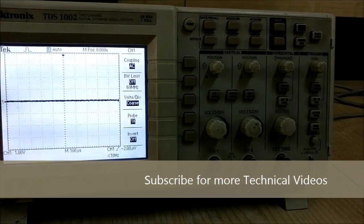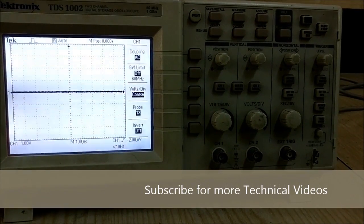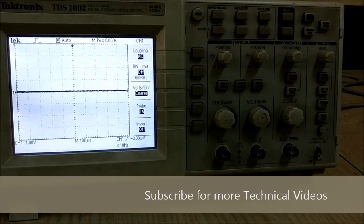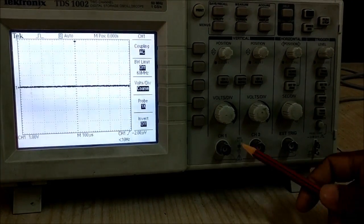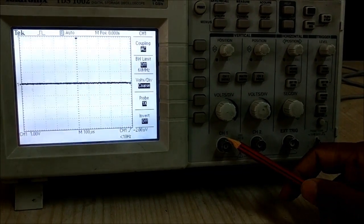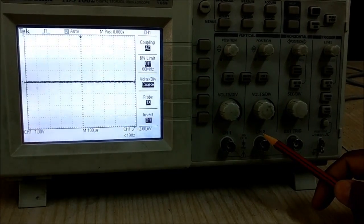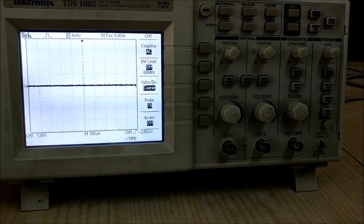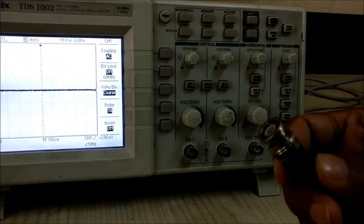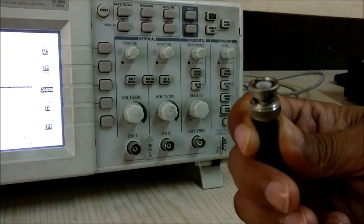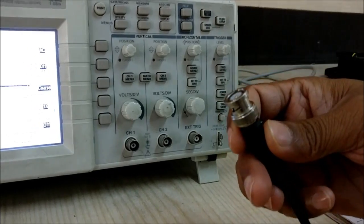Now we have to measure a given input signal using the DSO. First, we need to connect the input signal. The input can be connected to channel 1 or channel 2. I am taking a BNC connector which has a sinusoidal wave input, and now we will connect it to channel 1.